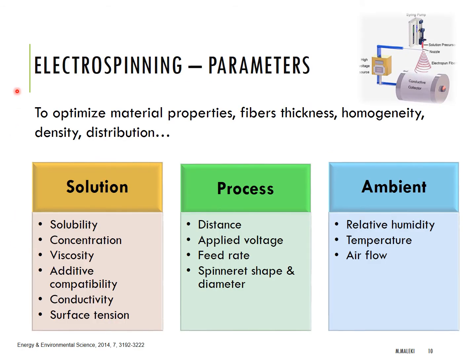In order to achieve the desired fiber diameter, bead-free fibers, and a porous and uniform fibrous mat, optimization of the electrospinning parameters is necessary. These parameters include three main groups: solution parameters, process parameters, and ambient parameters.